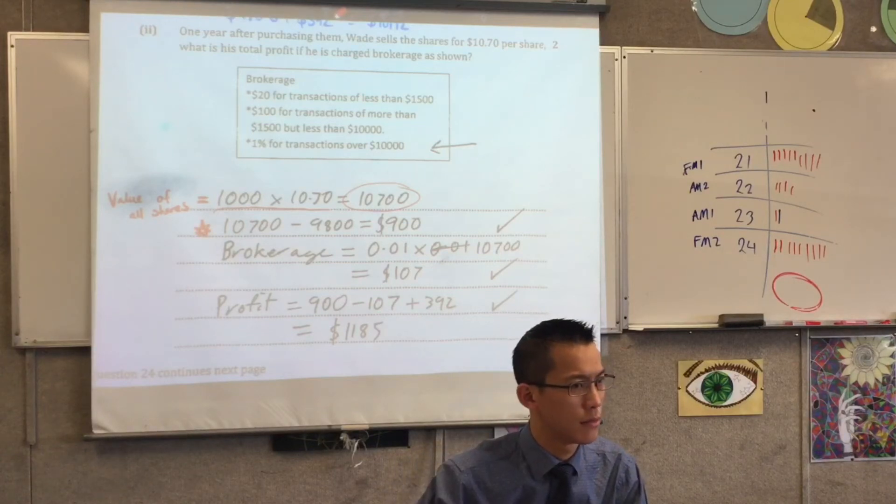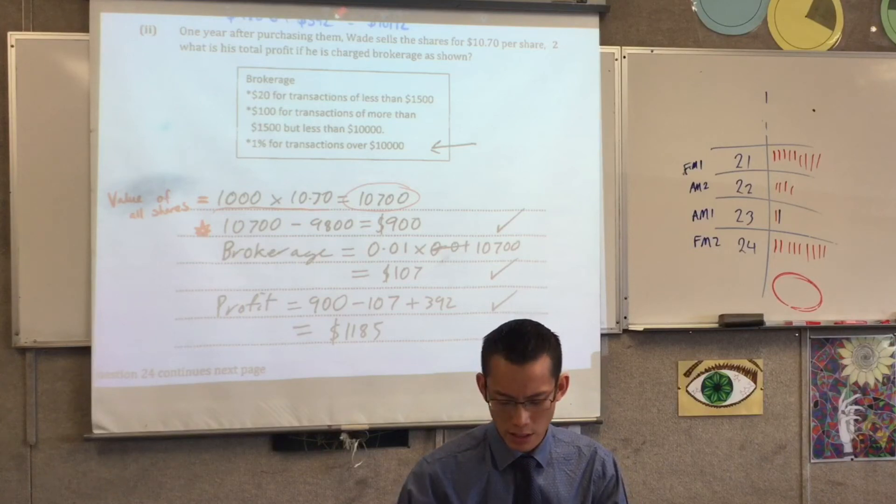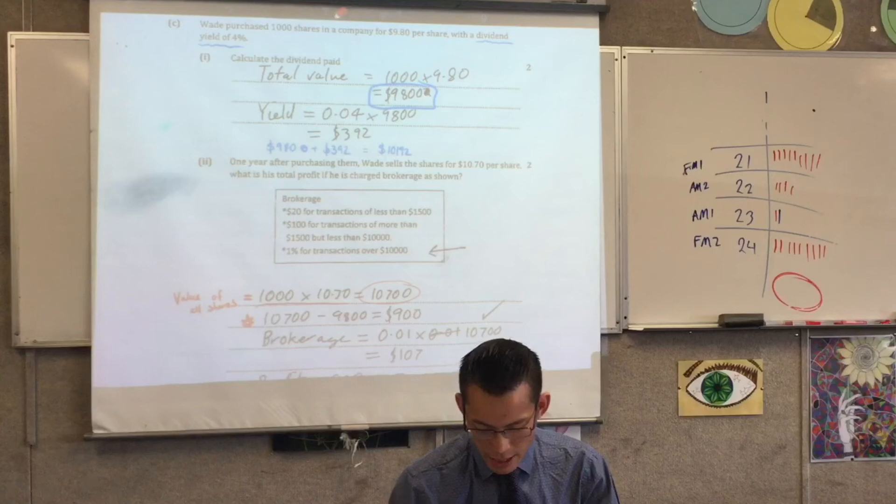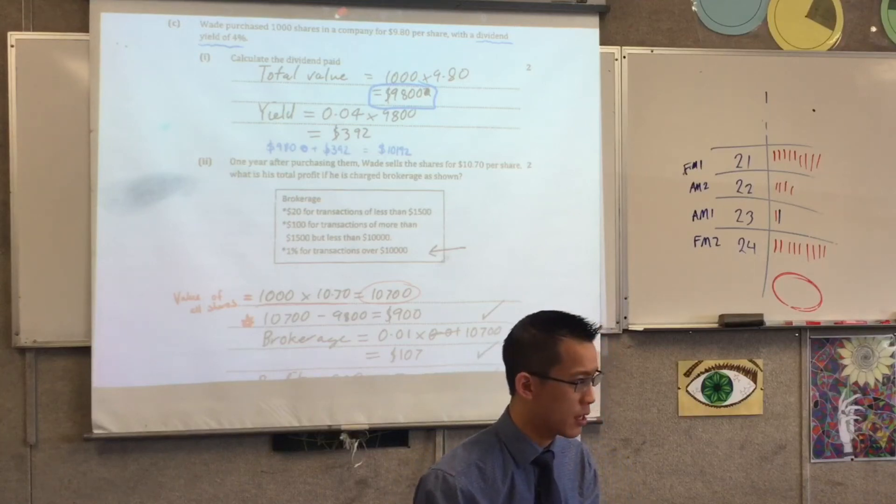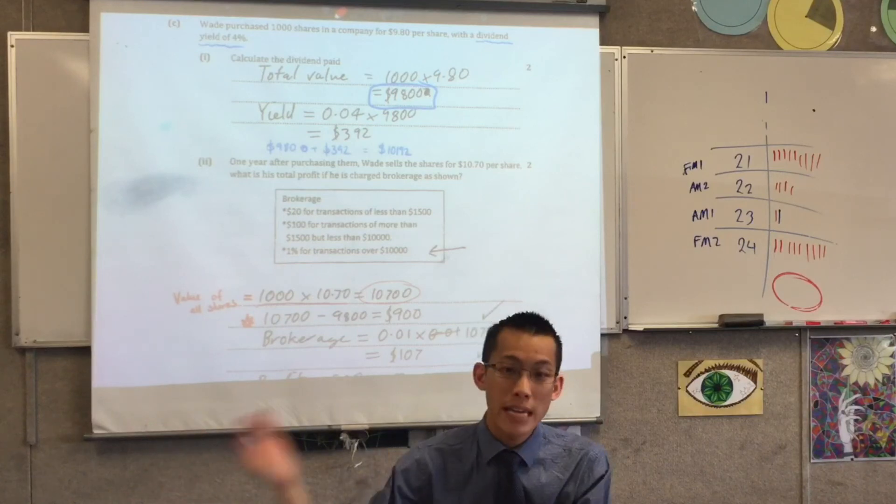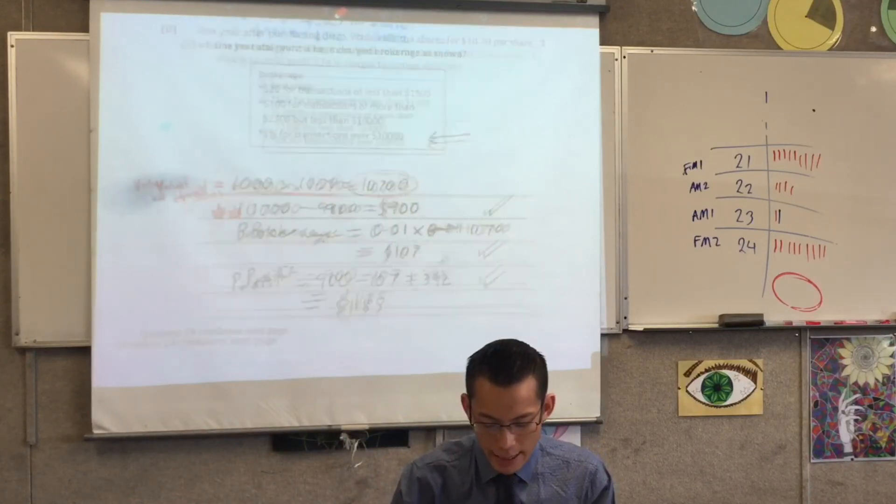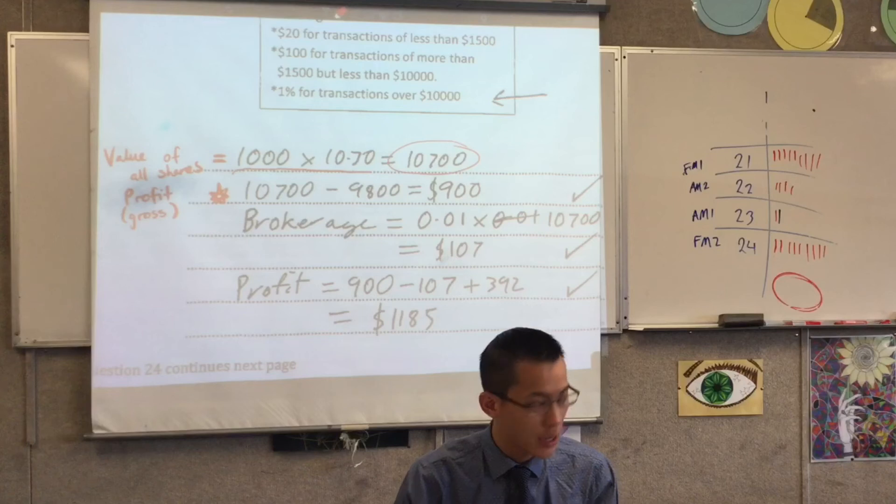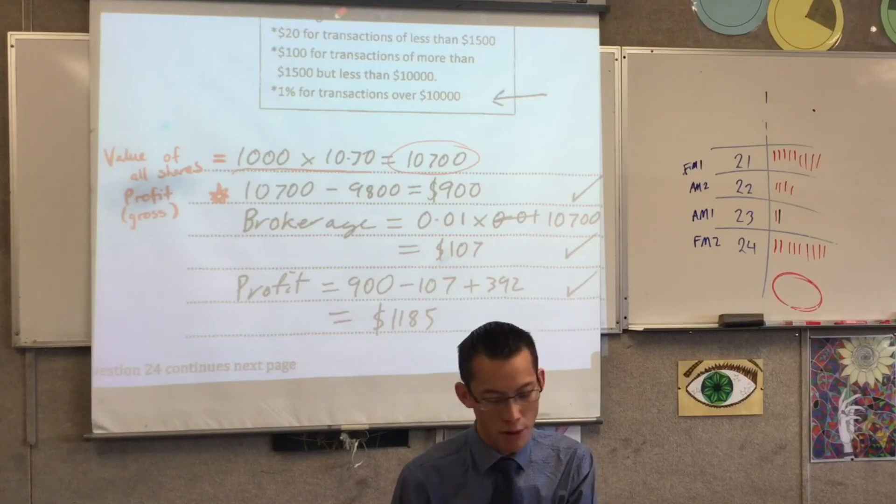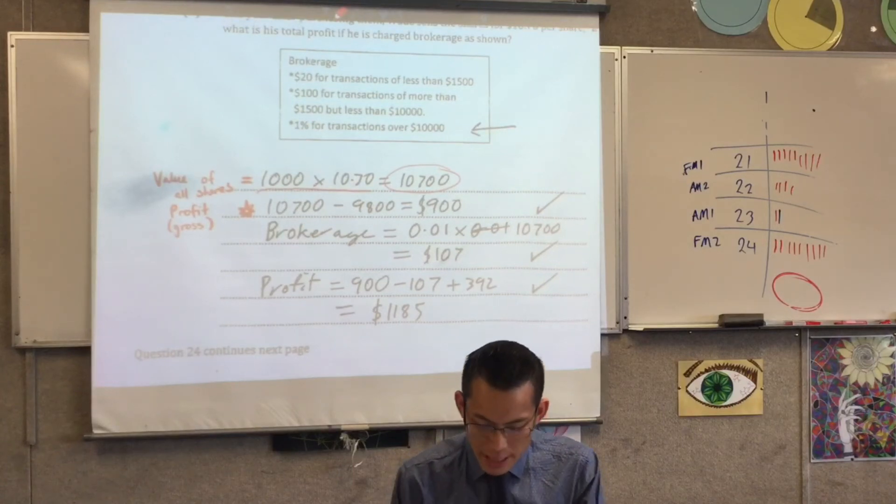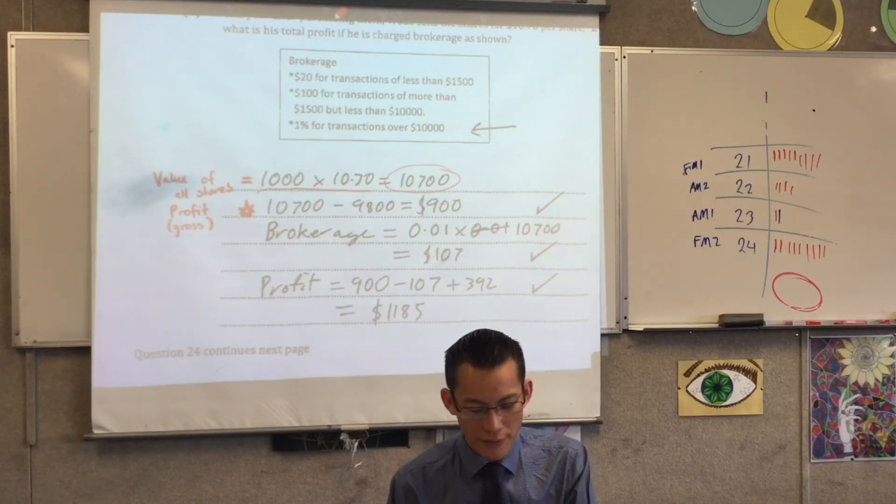Now what is this second line? Why is there a subtraction happening? What is the number that's being subtracted? Where does it come from? It comes from part one, because that $10,700, part of that is money he spent at the beginning to get the shares in the first place. So he has to subtract those. So $900, this is actually the profit - I suppose you could say gross profit - because he sold it but the broker hasn't actually charged any fee yet. So that's why I'm calling it gross.